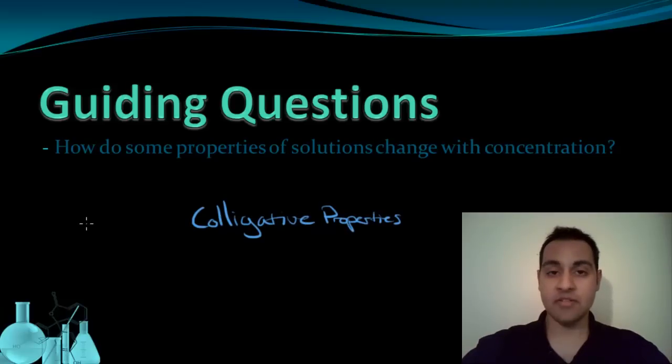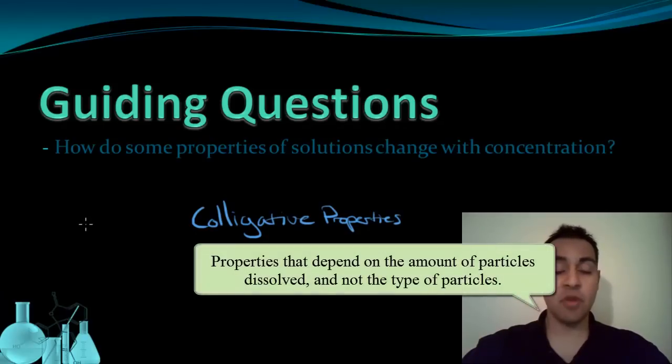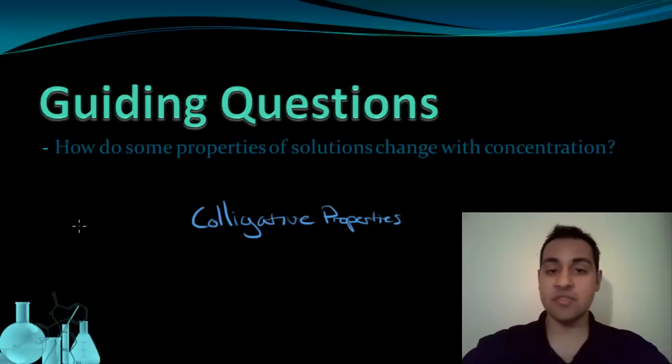Colligative Properties are properties that depend on the concentration of particles and not the type of particles. So for these properties, the only thing that matters is the amount of stuff that's dissolved in them. It doesn't matter what kinds of substances are dissolved, only how much of it's dissolved.